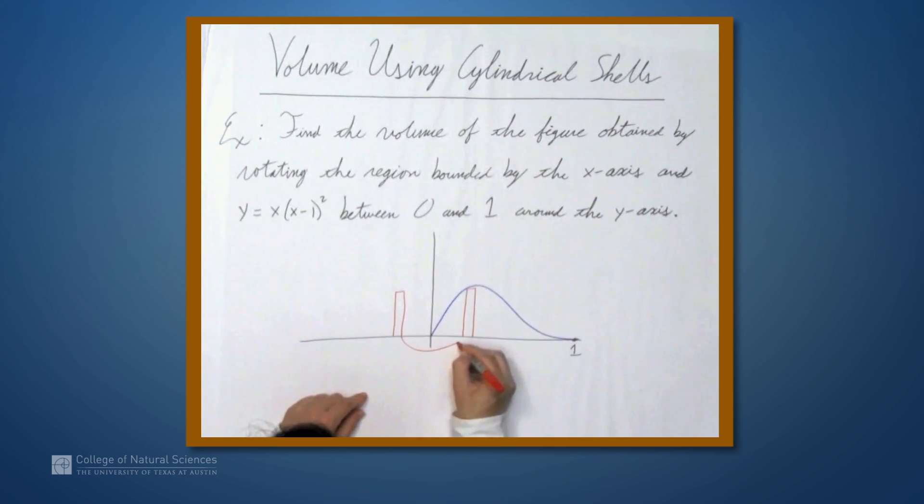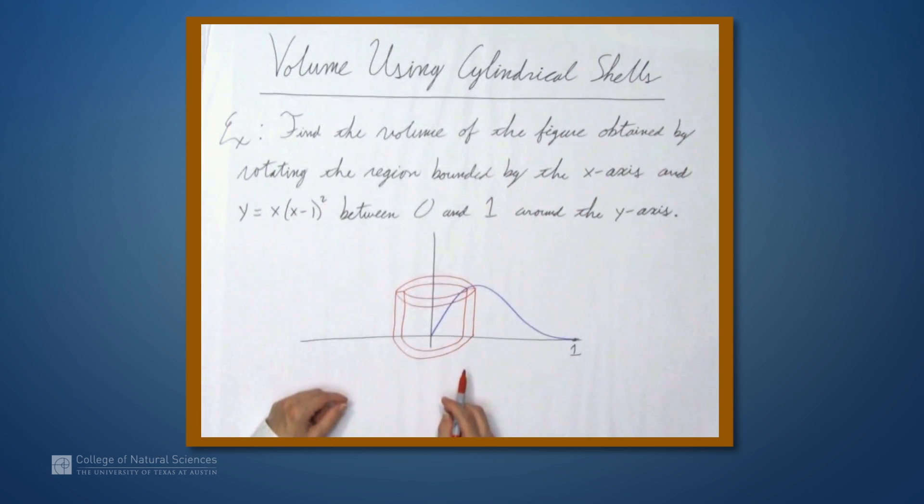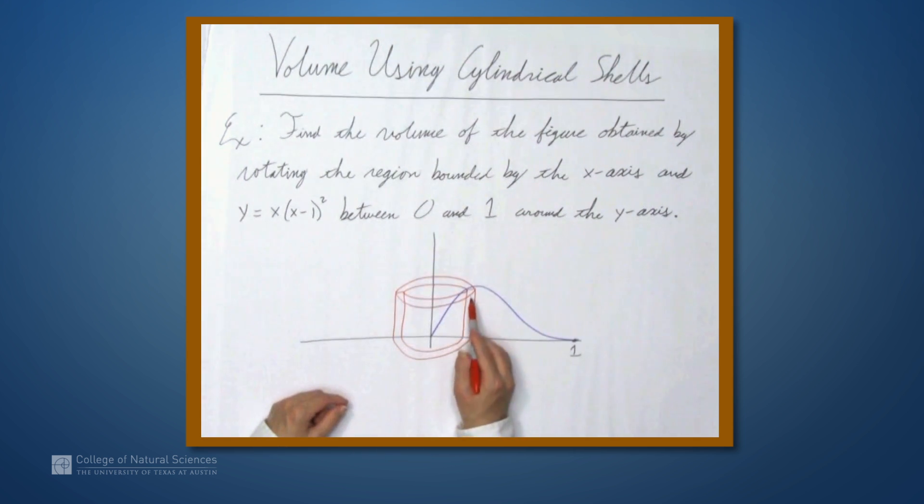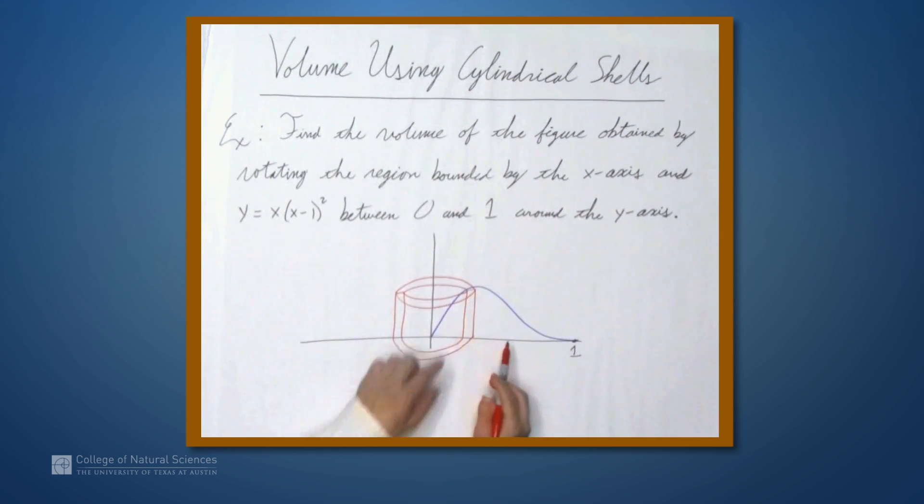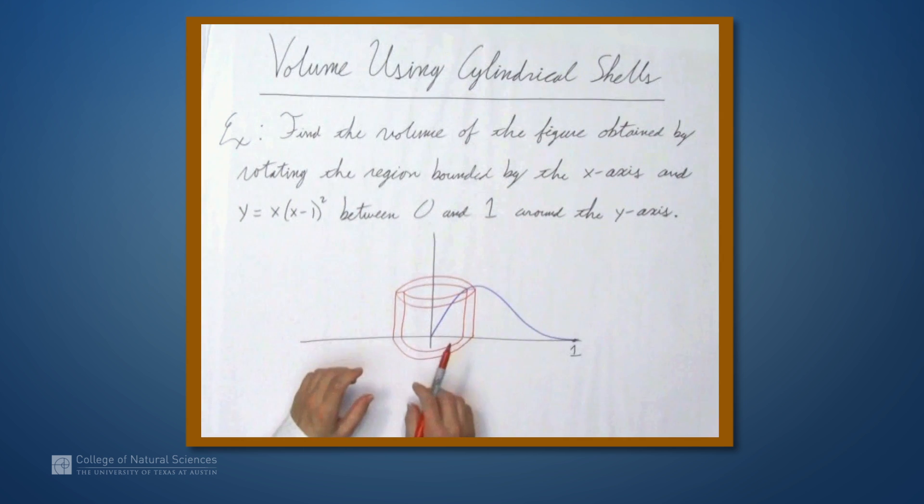And we end up with what we'll call a cylindrical shell. So it's just the outside part of a cylinder. This thing inside, it's hollow. And remember, this rectangle is filled in, so we're actually getting what we can consider a three-dimensional object.